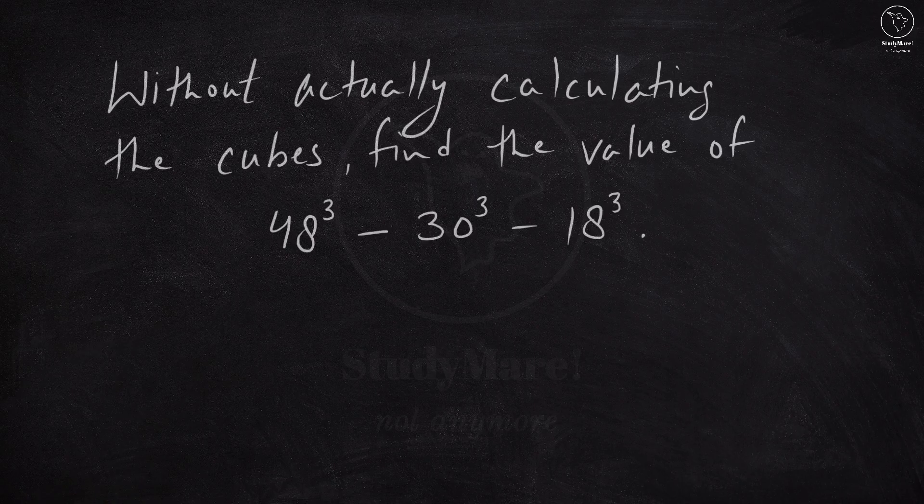For example, if you are asked to solve this question by actually calculating the cube, just imagine the level of multiplications you will be doing and how complex that multiplication, addition and subtraction will become, because of which the risk towards getting a wrong answer increases.